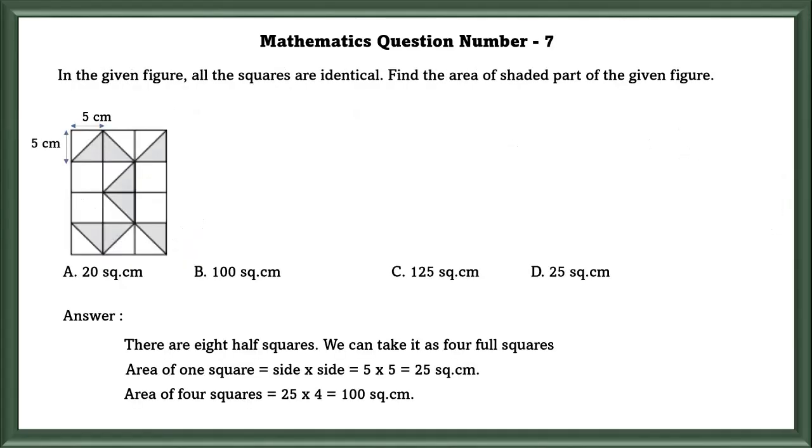Mathematics Question No. 7: In the given figure, all the squares are identical. Find the area of shaded part of the given figure. They have given the sides as 5 cm. And area is equal to side times side. So area of 1 square is equal to 25 square cm.